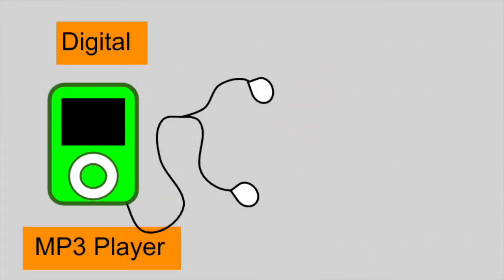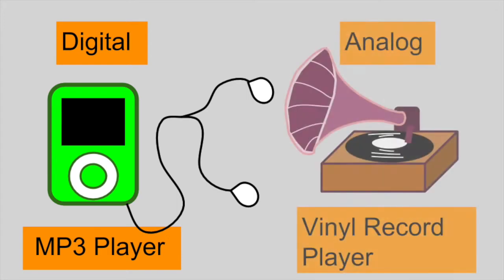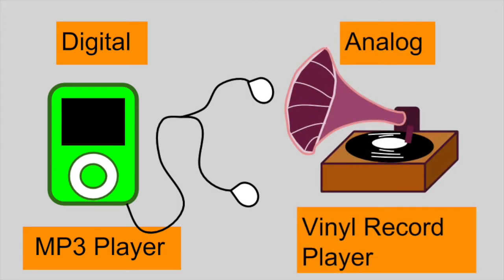For example, in a digital computer, we can represent music as a series of bits in an MP3 file. In an analog system, we can represent music as a pattern of waves. Old-fashioned vinyl records are a good example of an analog recording medium.